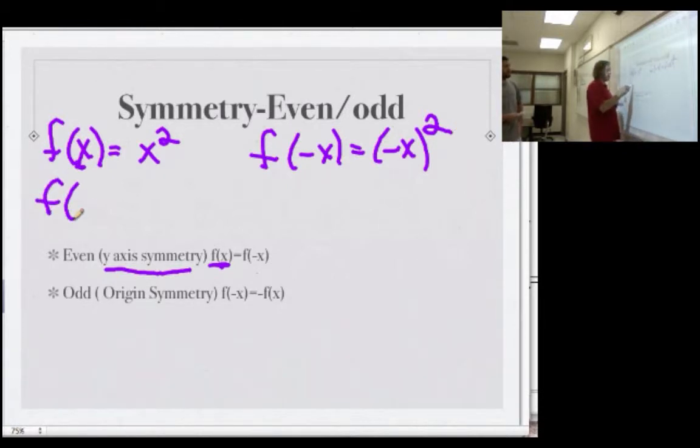It's just x squared. Yeah, so f of negative x is also x squared. If these are the same, it's even symmetry.